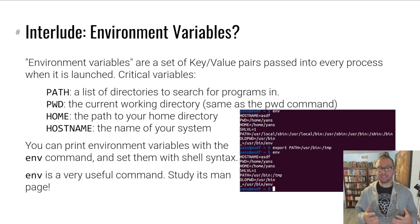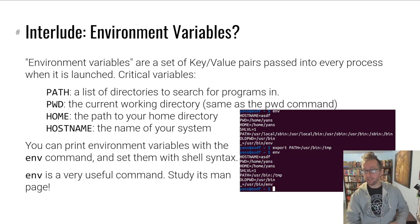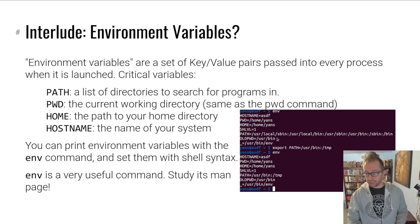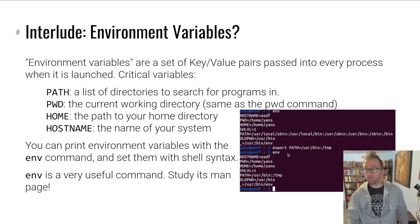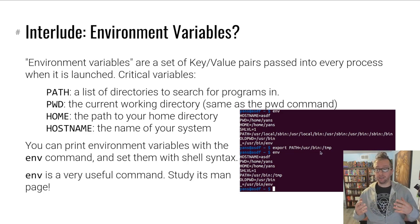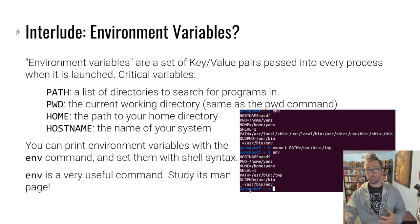You can print out the environment variables that you currently have with the env command — it's a very useful command and you should study its man page, especially for this module. Processes pass these environment variables to each other as they execute each other, so your shell will pass them on to any commands you execute. You can check the environment variables you're currently carrying around with the env command. You can also update your environment variables using shell syntax or through other APIs if you're writing a program.